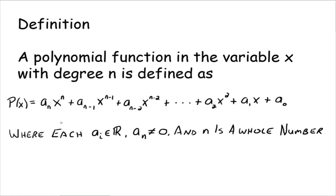All this notation is telling us is that the a's — a sub n, a sub n minus 1, a sub n minus 2, all the way down to a sub 1 and a sub 0 — are all just real numbers. These are the coefficients of your variable x, of all your x terms.